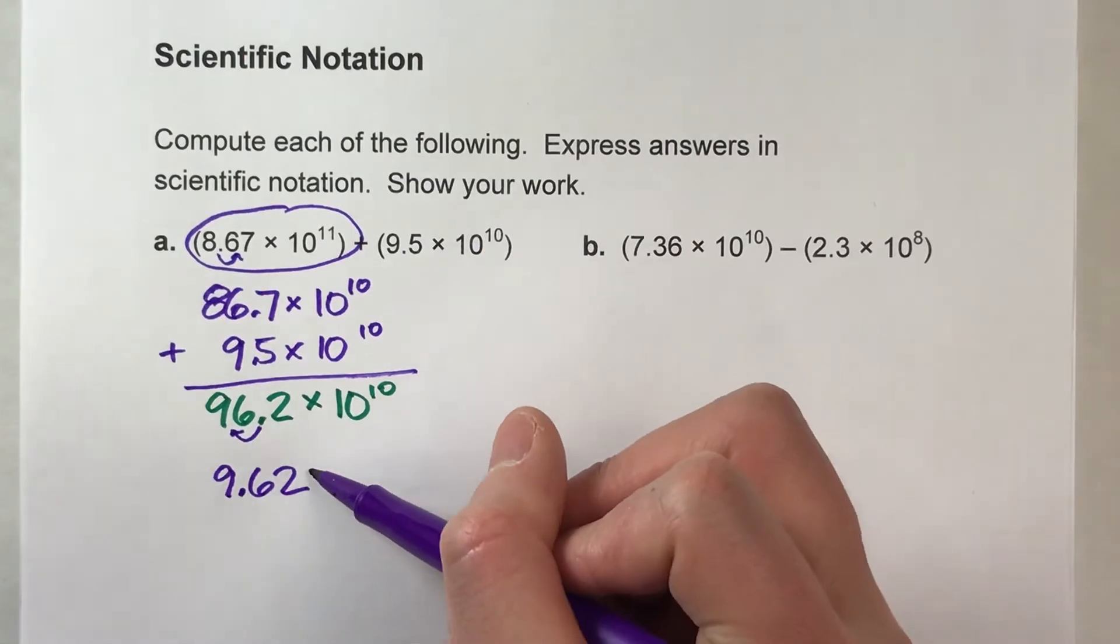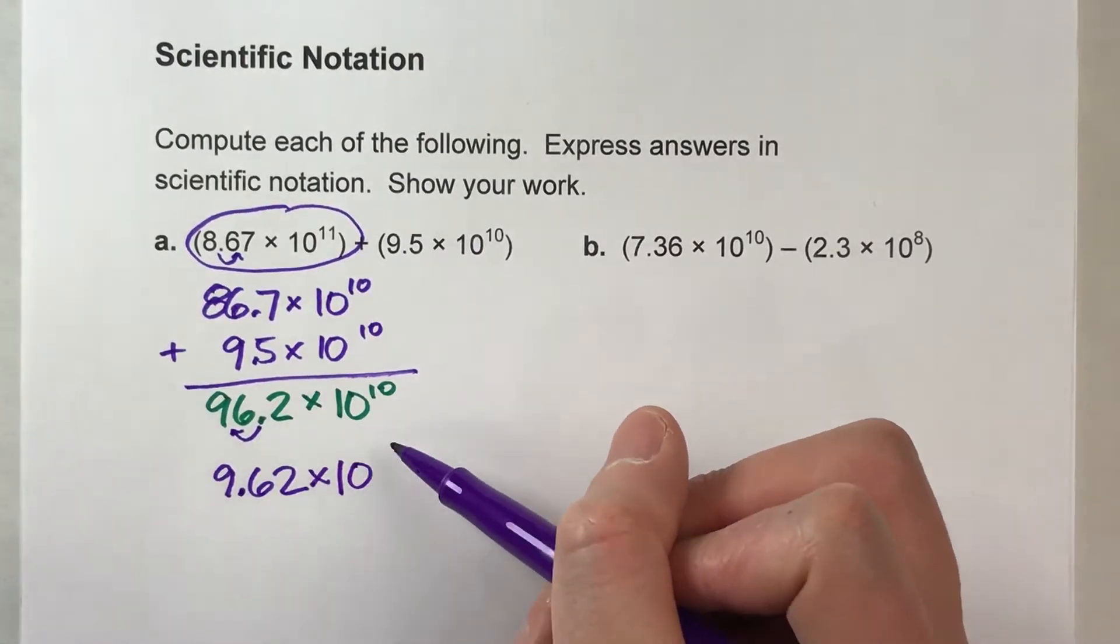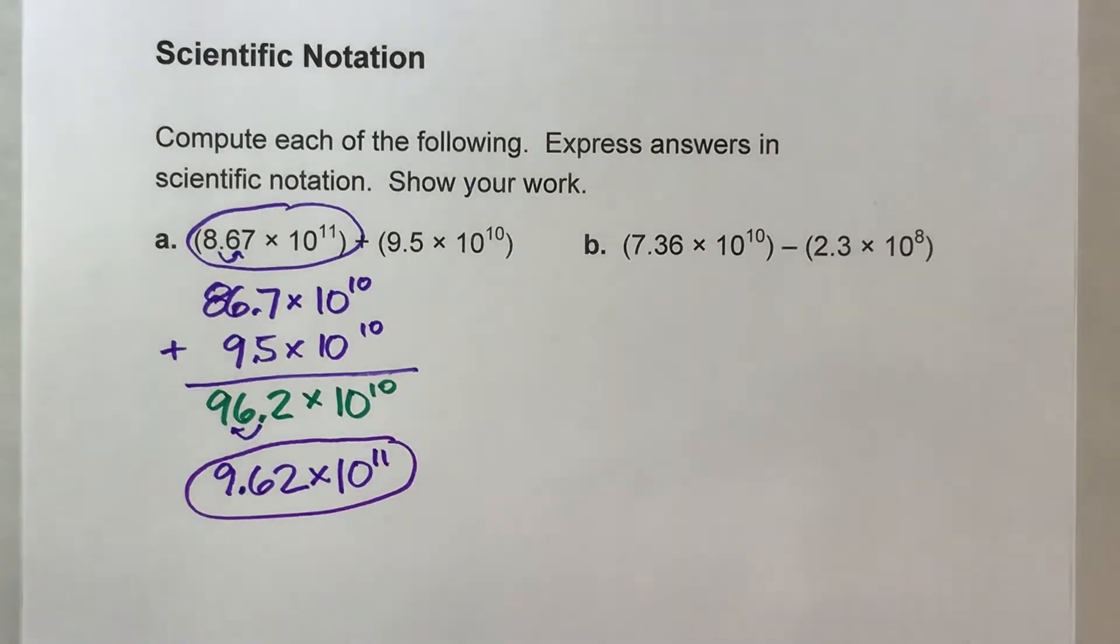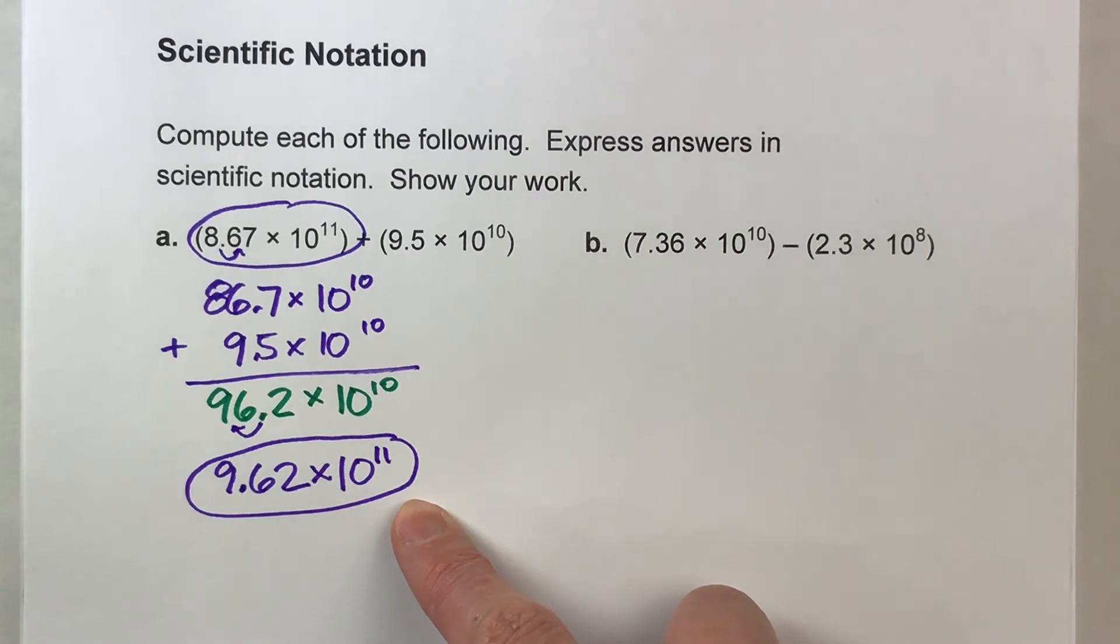So if I make this one step smaller, I have to make the power of 10 one step bigger to compensate for it. There's my final answer: 9.62 times 10 to the 11th power.